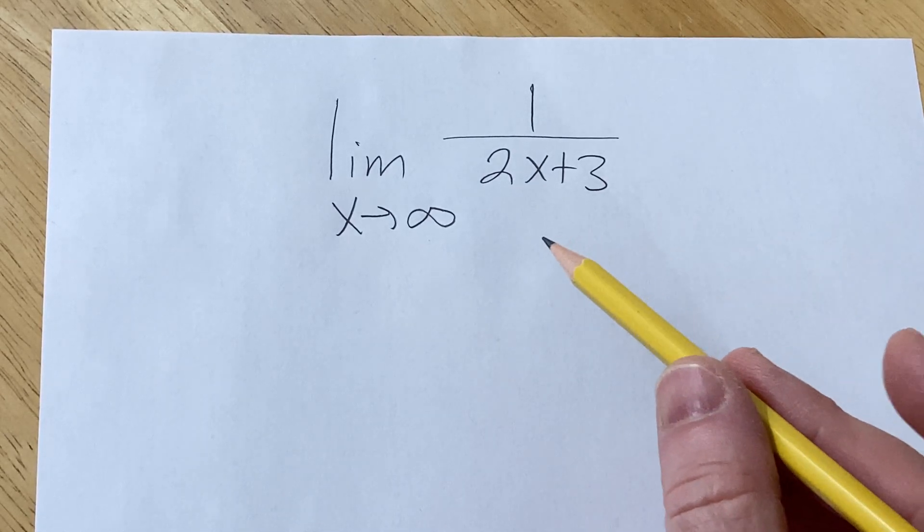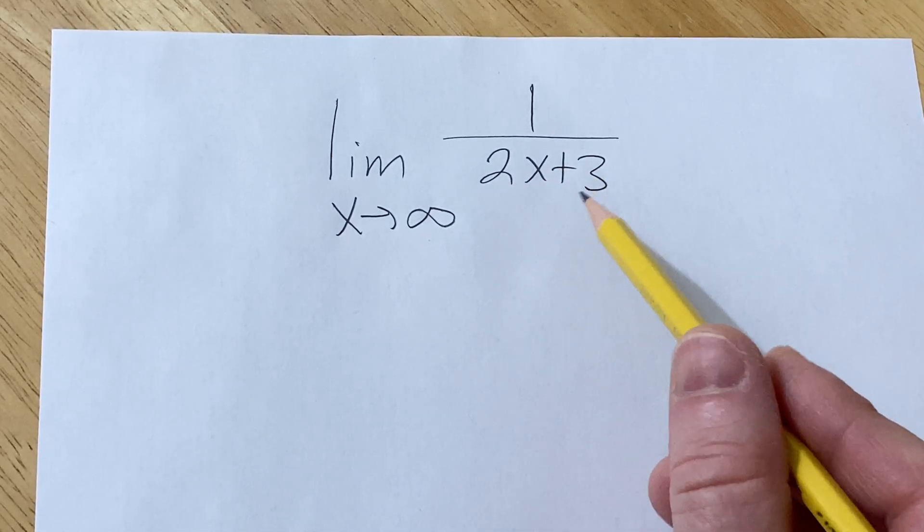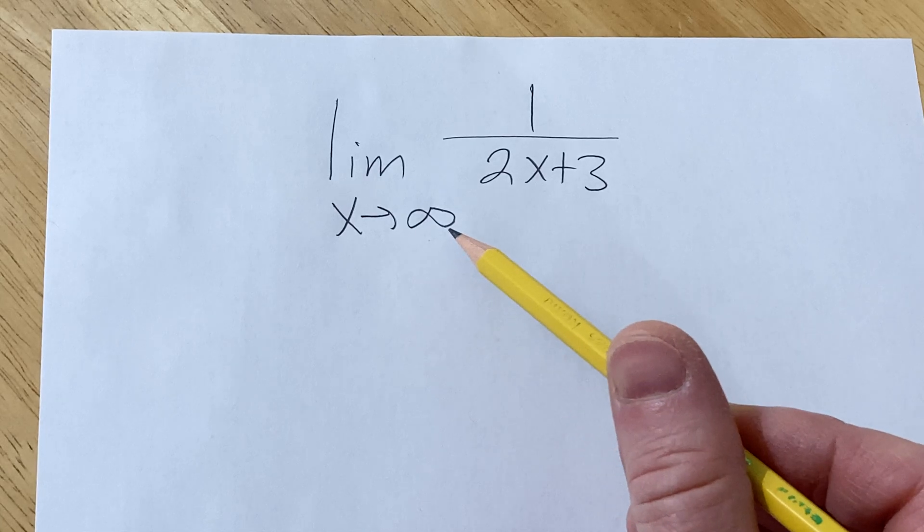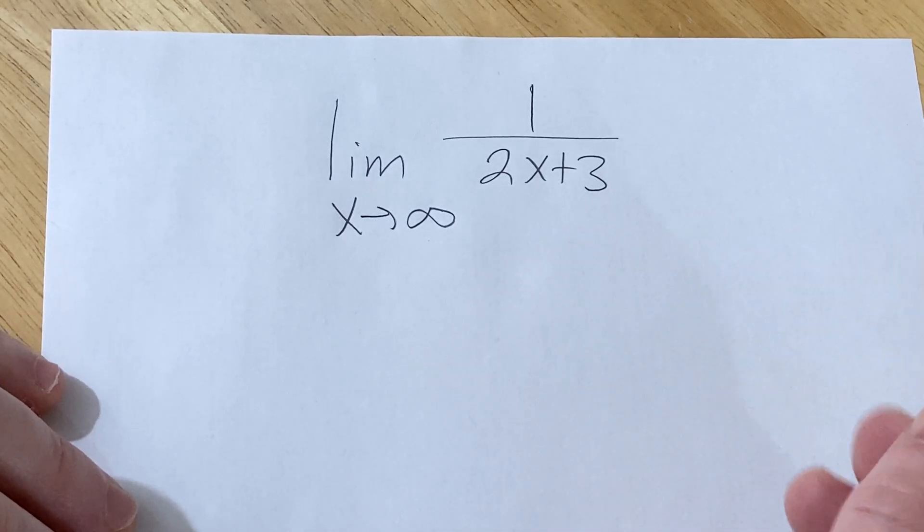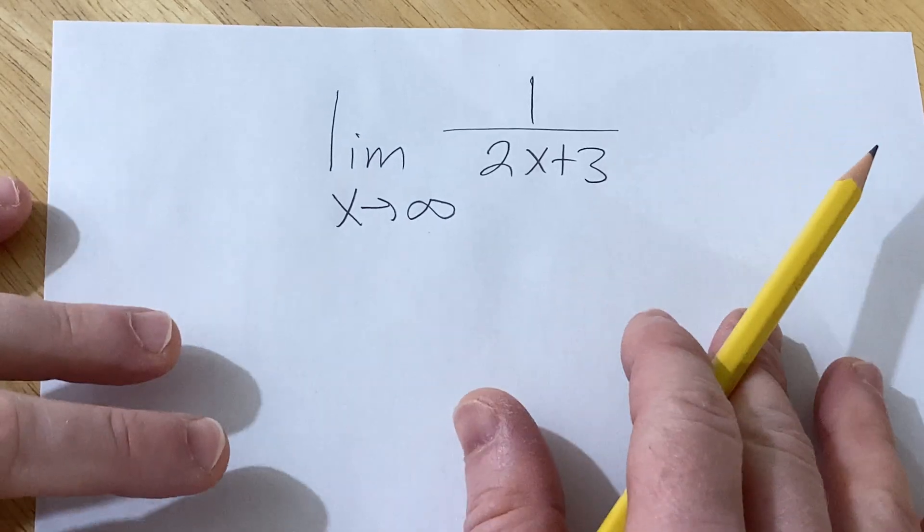Hello, in this problem we are going to find the limit of 1 over 2x plus 3 as x approaches infinity. So this problem is really easy, but we're going to work through it and explain it.